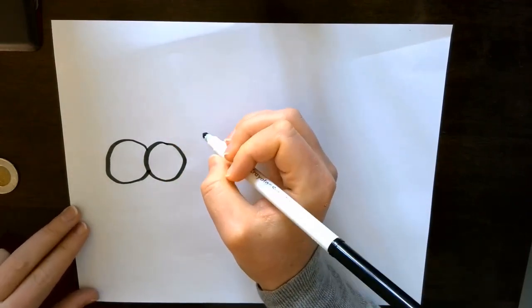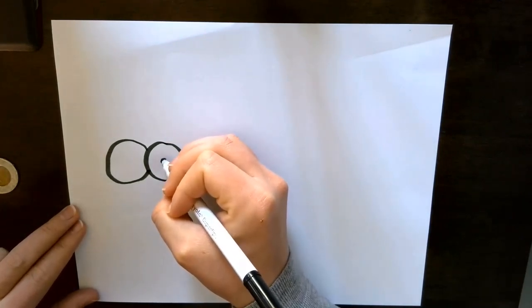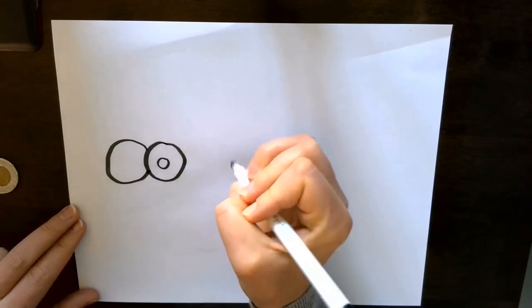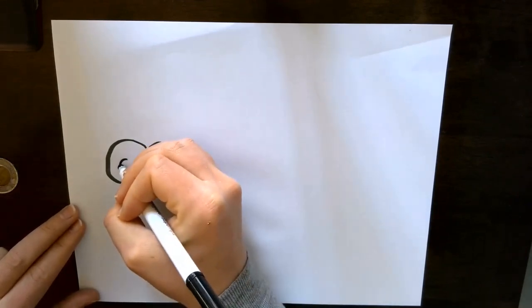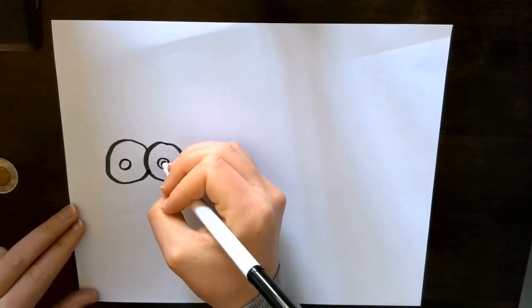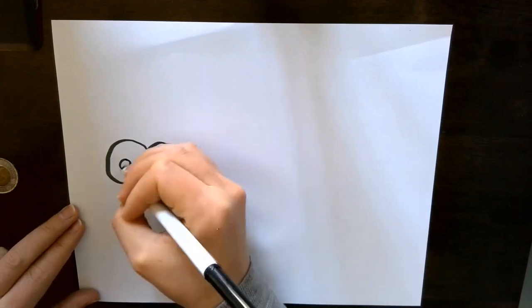Next, we're going to fill in the pupils of the eyes. That's the part in the center so we'll do another round circle, a tinier one this time, inside both of the eyeballs and then I'm going to fill those ones in. I'm going to color them black. You could do that now or if you want to wait until you are coloring you can do that also.